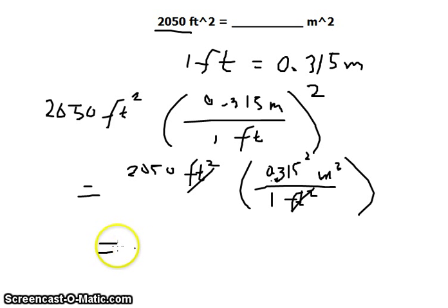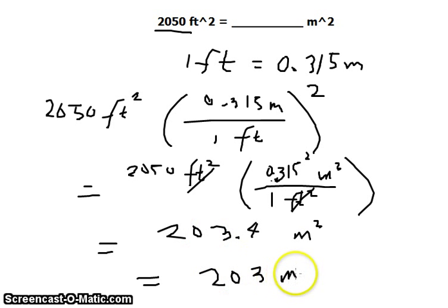and we get an answer that is 203.4 square meters. But this number has 3 significant figures, and we are just required to have 2, so we can just write 203 square meters. That's the final answer. Thank you.